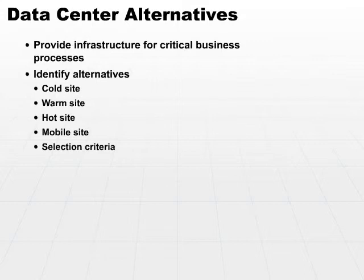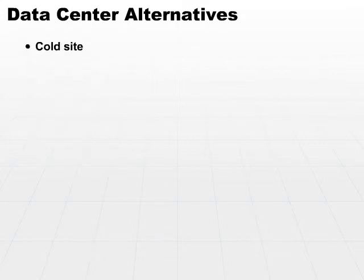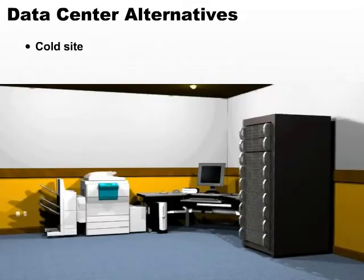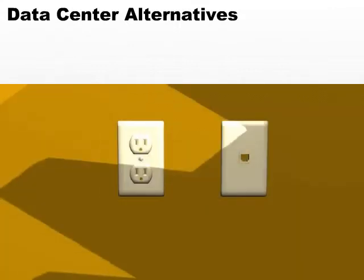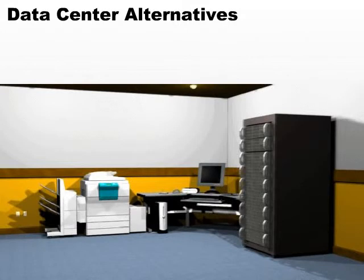Let's start off with a cold site. A cold site is nothing more than a bare room — it's a facility with basic environmental utilities. We know that our cold site has electricity, phone jacks probably on the wall, HVAC services, and people can live and work there. So we know it's got the basics.